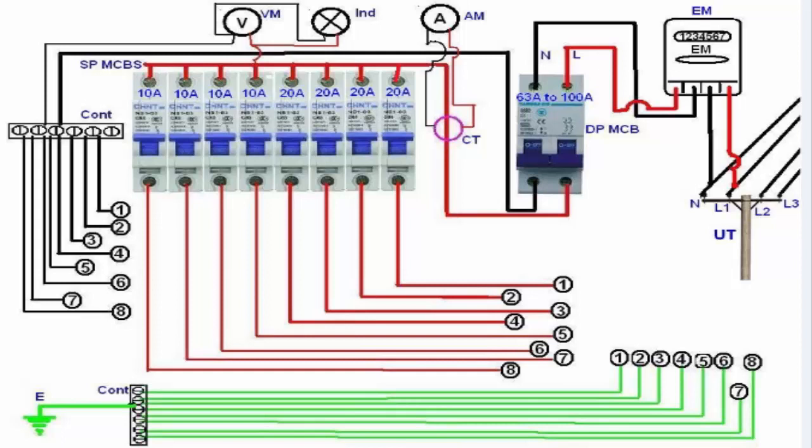In this diagram I have shown the utility fold energy meter, double pole MCB circuit breaker, single pole MCB circuit breakers, light indicator, voltmeter, ammeter with current transformer, wiring connections, and also the protection system called earth. In this diagram I don't use the RCCB or RCD, and in the next video tutorial we will explain the connection of RCCB in our distribution board.